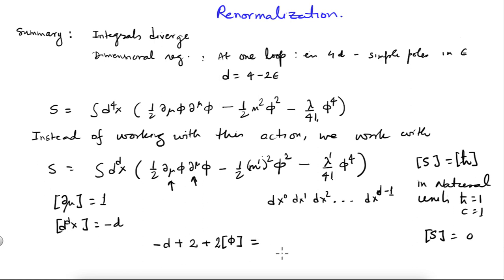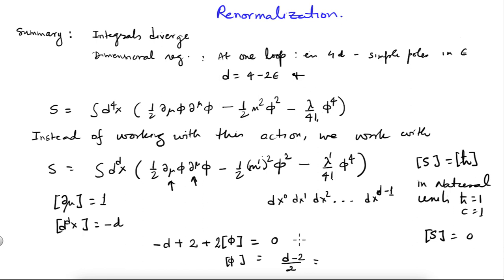Collecting terms: the measure gives minus d, del-mu contributes 1, and the other del-mu contributes 1, and there are two factors of phi. Since the action is dimensionless, all terms must be dimensionless, giving: minus d + 2 + 2 times [phi] = 0, so [phi] = (d-2)/2. For d = 4 minus 2 epsilon, this gives [phi] = 1 minus epsilon.